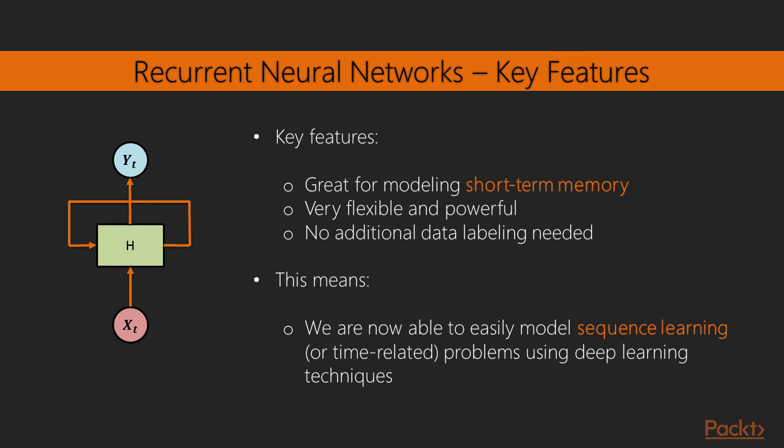So the key ability of a recurrent neural network is letting the information persist while the input patterns change. And since we assume that the patterns are sequentially dependent somehow, this is exactly what we want. So recurrent neural networks are great for modeling what is called short-term memory in neuroscience. That is the capacity of holding a small amount of information in mind in an active, readily available state for a short period of time, which is in contrast with long-term memory through which we store and retrieve information after a long period of time.